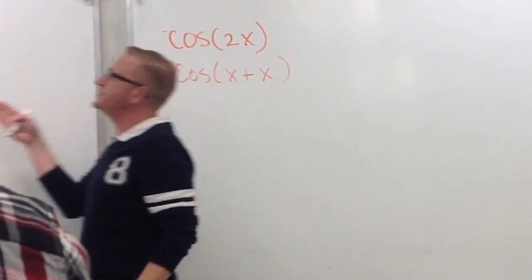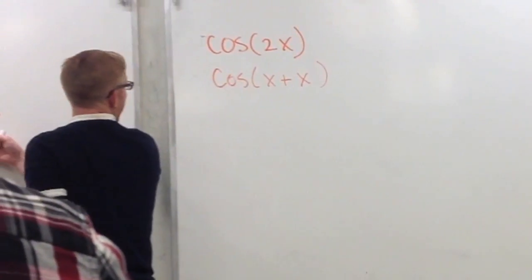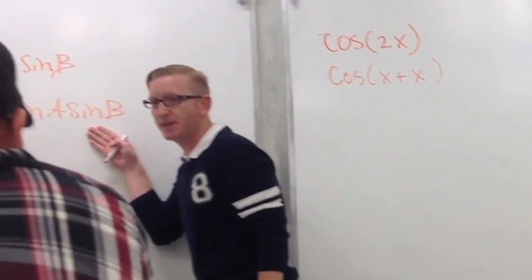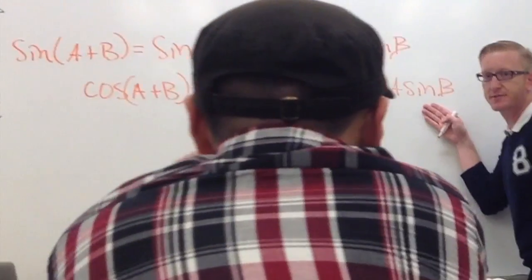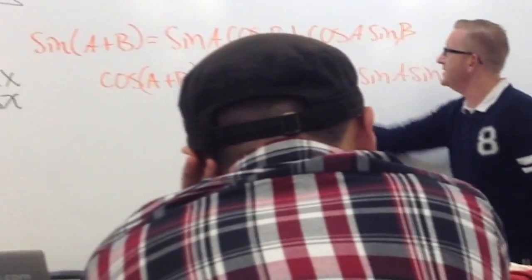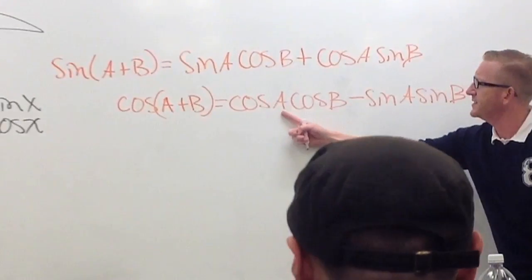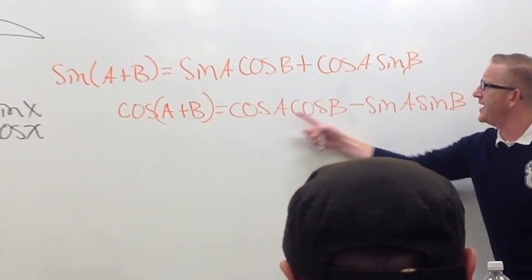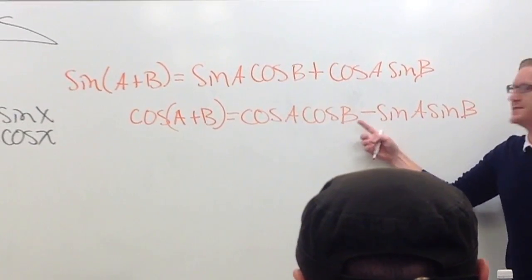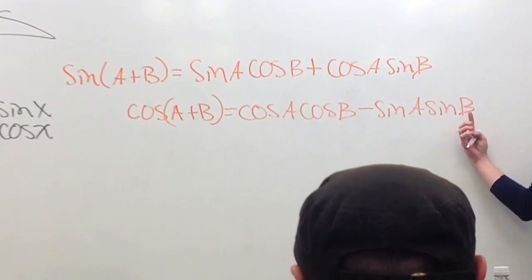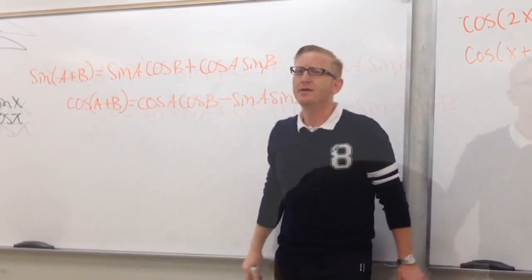I want to use the cosine of the sum of two angles — the sum of these two, this a and this b. This is the cosine of a times the cosine of b minus the sine of a times the sine of b.